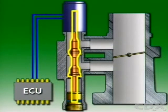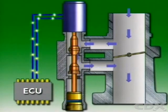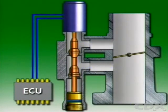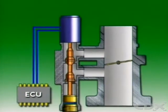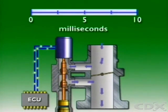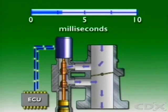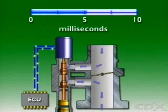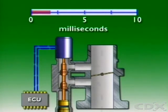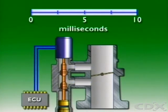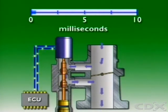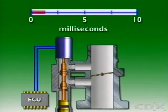Thereafter, the taper valve is positioned by pulsing the solenoid winding circuit at a predetermined frequency. The amount of valve opening, and therefore the amount of air flow, depends on the on time of the pulse. A long on pulse with a short off pulse will produce a high average voltage and therefore a large opening of the valve. A short on pulse with a long off pulse will produce a low average voltage and a small valve opening.